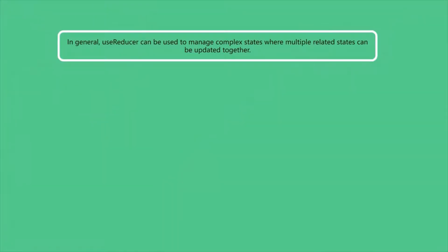Generally, you can use useReducer for state management when you feel like using useState is becoming more and more cumbersome and you are creating a lot of states. Sometimes these states are related states but they have been created as independent states using the useState hook. And you want to update these related states together, which doesn't work out with useState. Then you might want to consider useReducer.